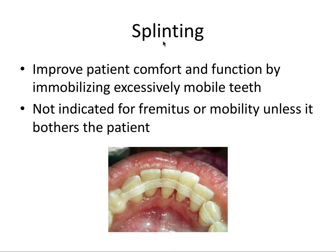Splinting is used — as far as the board exam is concerned — only to improve patient comfort and function by immobilizing excessively mobile teeth. It's not indicated for fremitus or mobility unless it bothers the patient. You can splint periodontally compromised teeth together with composite or more flexible wire.